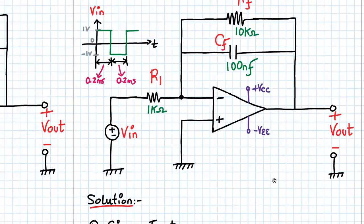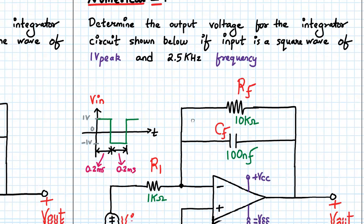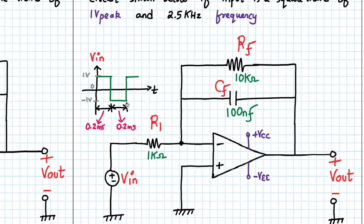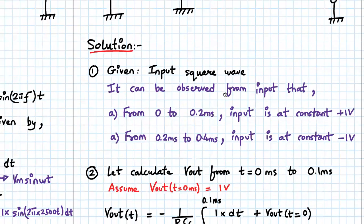Now let us analyze with a square wave input. Numerical number two: determine the output voltage for an integrator circuit if the input is a square wave of one volt peak and 2.5 kilohertz frequency. The total time period is 0.4 milliseconds. With a 50 percent duty cycle, on time is 0.2 milliseconds and off time is 0.2 milliseconds. The peak-to-peak amplitude is 2 volts, which is 1 volt peak. RF is 10K, R1 is 1K, and CF is 100 nanofarad.